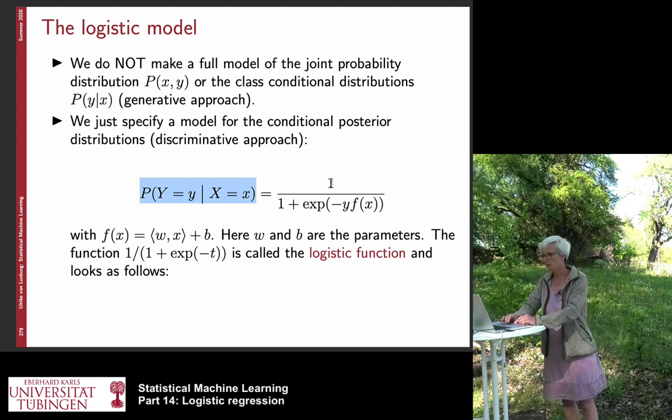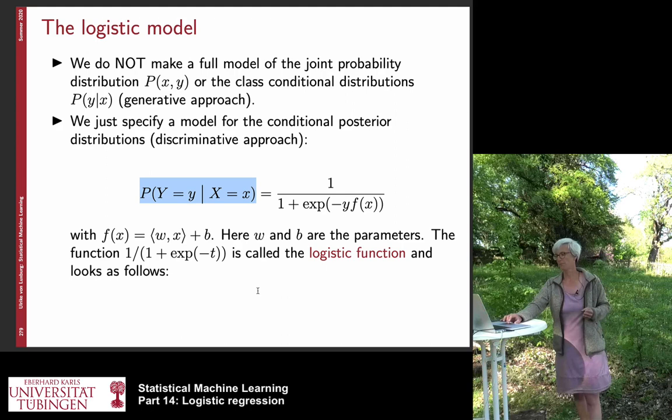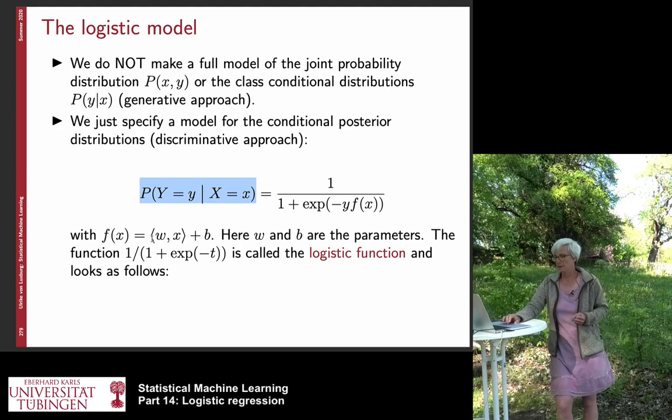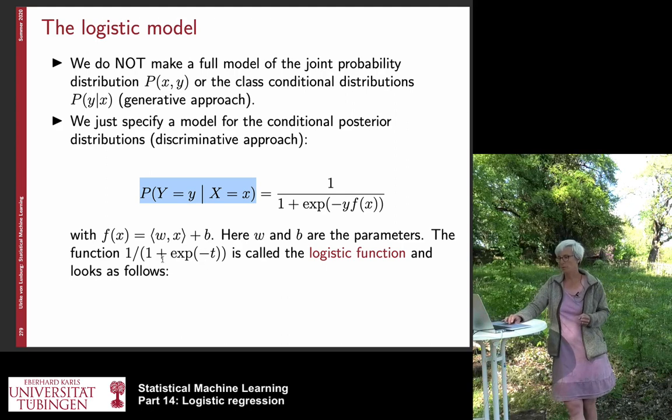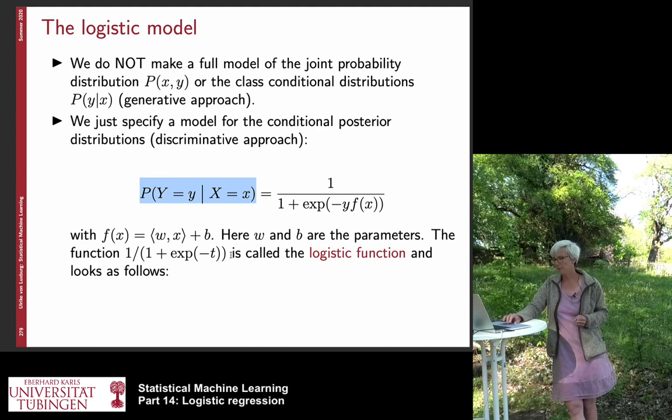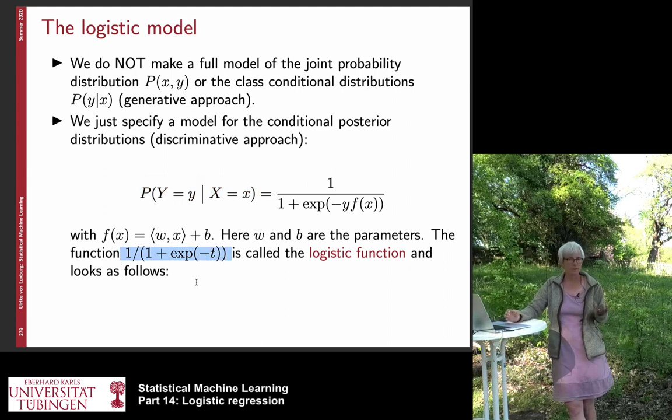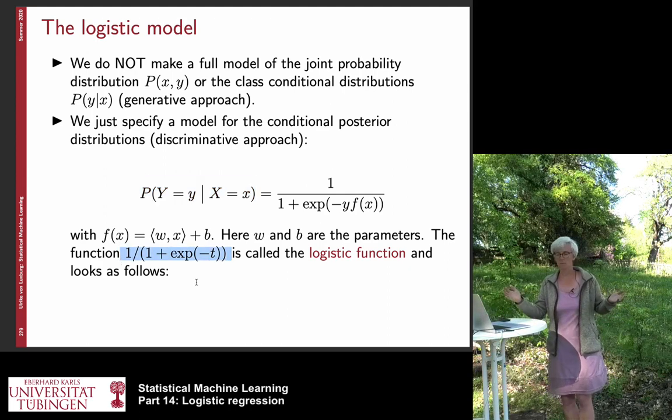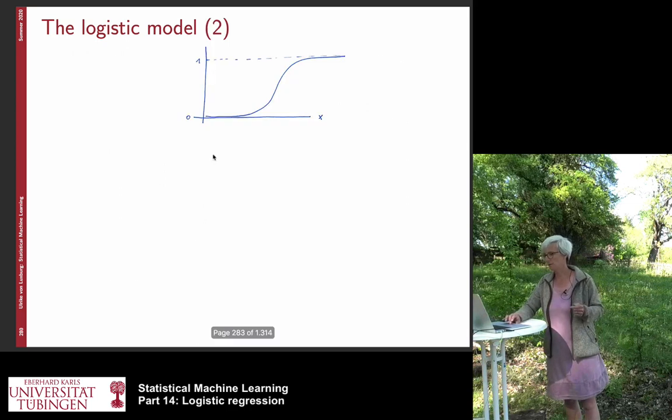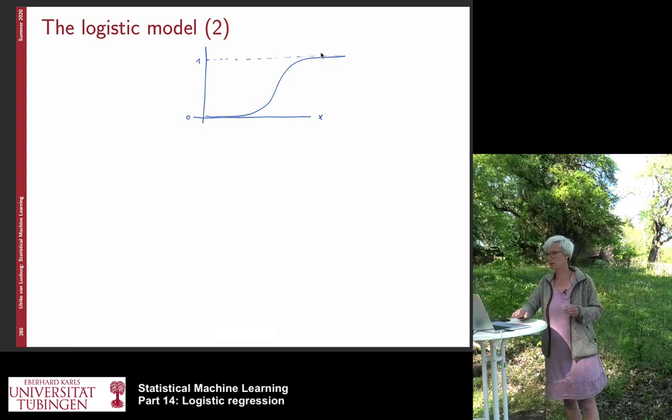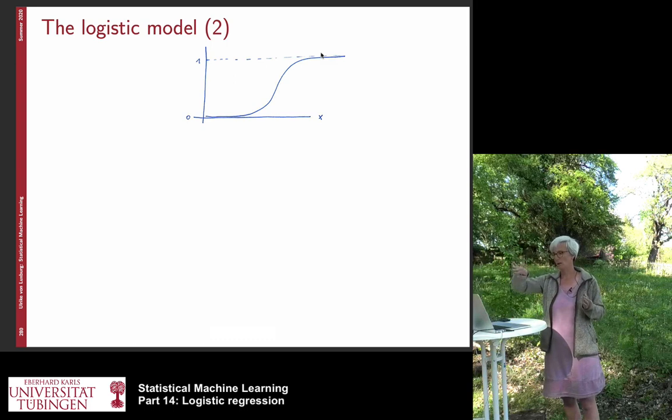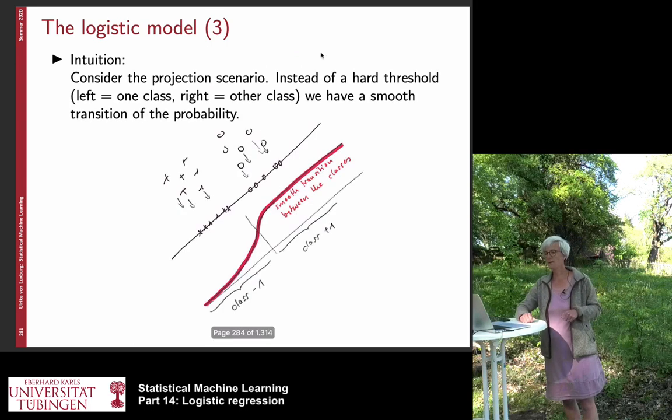And now here is a particular model that people can choose. So the model is 1 over 1 plus e to the minus y f(x). And again f has the same form as before. And this function, this is called the logistic function. And it is used in many different contexts. And it looks like this. So it is close to 0 here, it is close to 1 here, and then there is a smooth transition that brings it from 0 to 1.